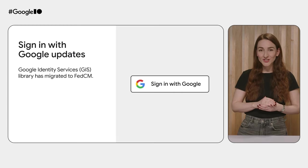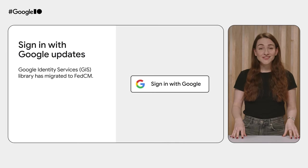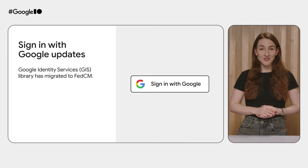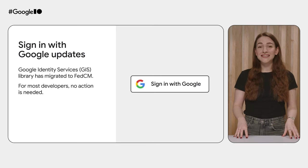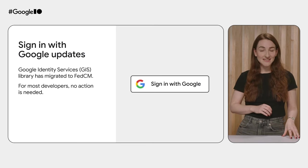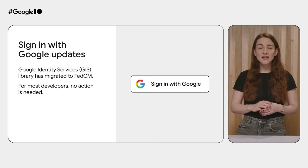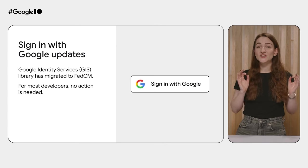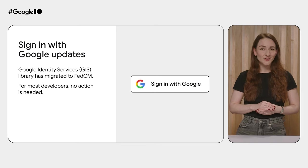If you're using Sign-in with Google as your identity provider, the latest Google Identity Services Library, or GIS, is ready for third-party cookie deprecation — it migrated to FedCM in April 2024. For most developers, this migration occurred seamlessly through backwards-compatible updates to the GIS library. Some websites with custom integrations may require minor changes, and these developers will have until third-party cookies are restricted by default to make those changes.